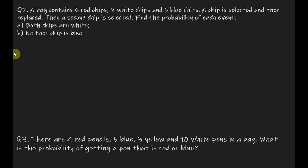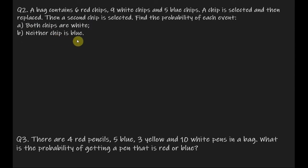Now let's go with our second example. A bag contains 6 red chips, 9 white chips, and 5 blue chips. A chip is selected and then replaced, then a second chip is selected. Find the probability of each event: A — both chips are white, and B — neither chip is blue. From the problem statement, we have a total of 6 plus 9 plus 5, a total of 20 chips in the bag.